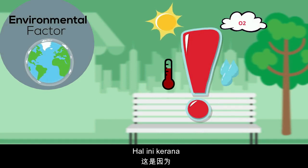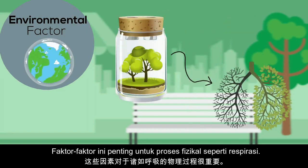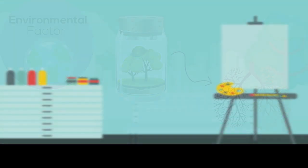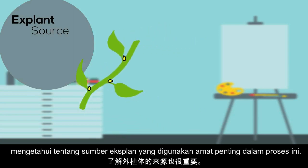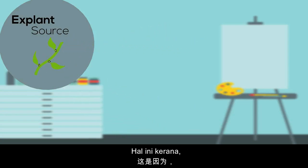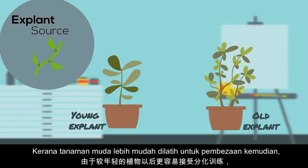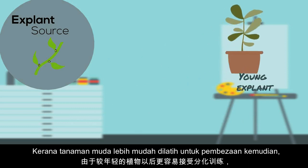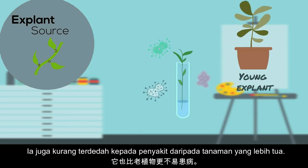Environmental factors are crucial for various physical processes such as respiration. It is also important to know the source of the explant. A younger explant is better for tissue culture because younger plants are easier to train for differentiation, as they are not fully differentiated yet. They are also less prone to diseases than older plants.